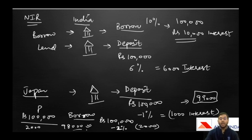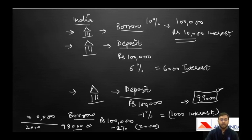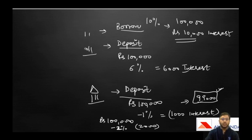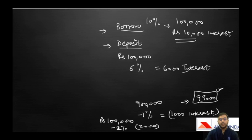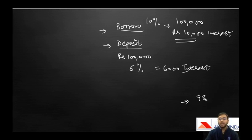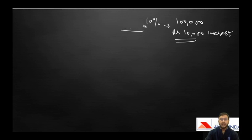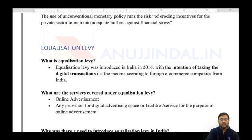Negative interest rate is an unconventional policy followed in extreme circumstances to kick-start the economy by incentivizing people to borrow, consume, and invest rather than keeping money idle. If people don't start consuming or investing, suppliers will not produce. Negative interest rate policy is followed as one of the last resorts.